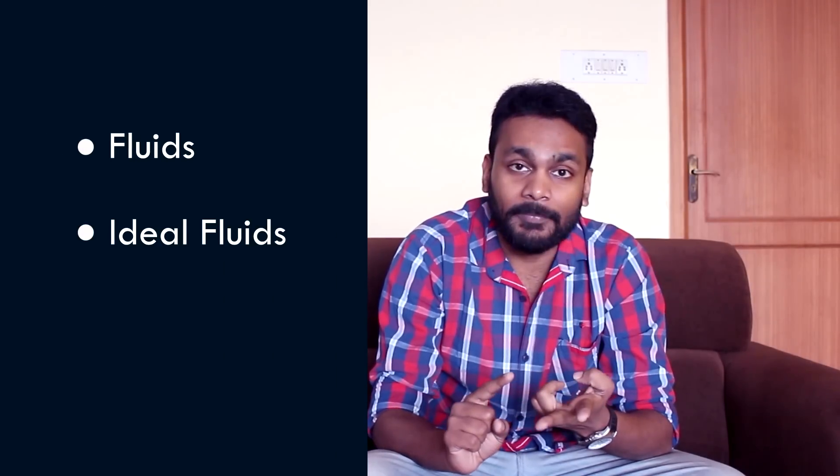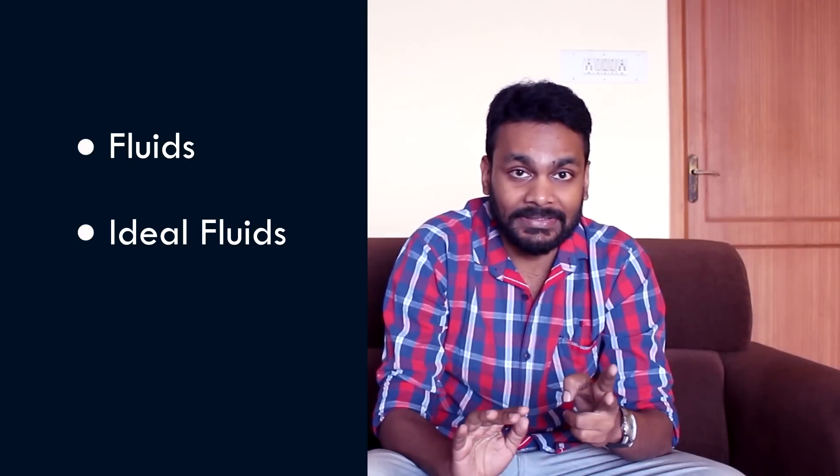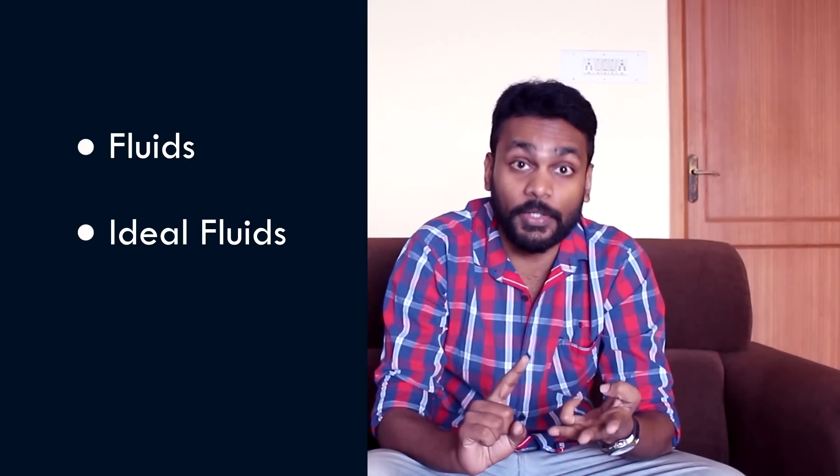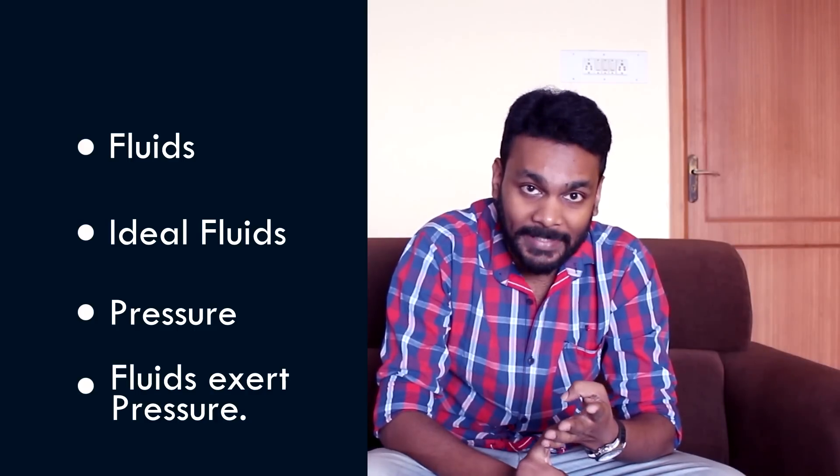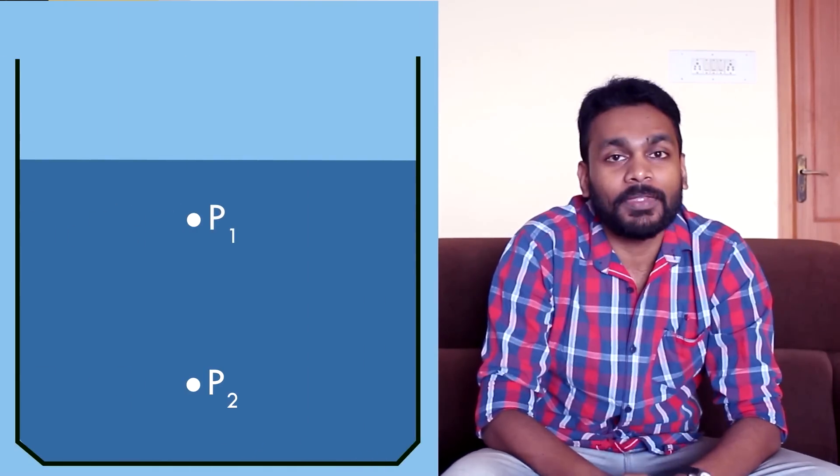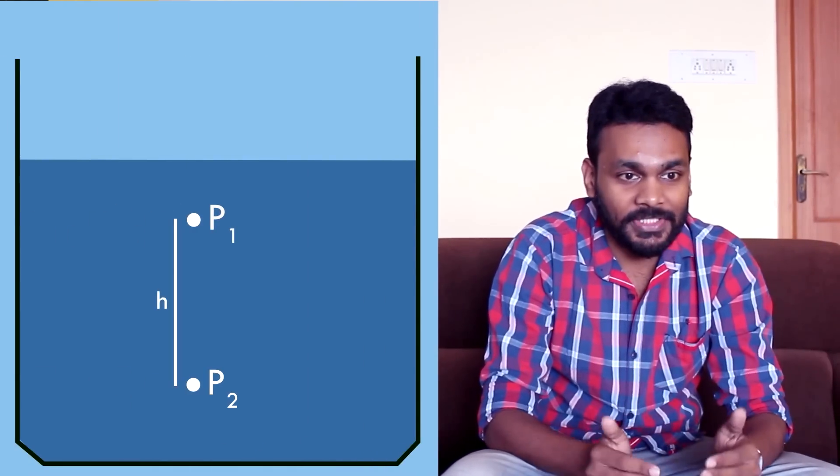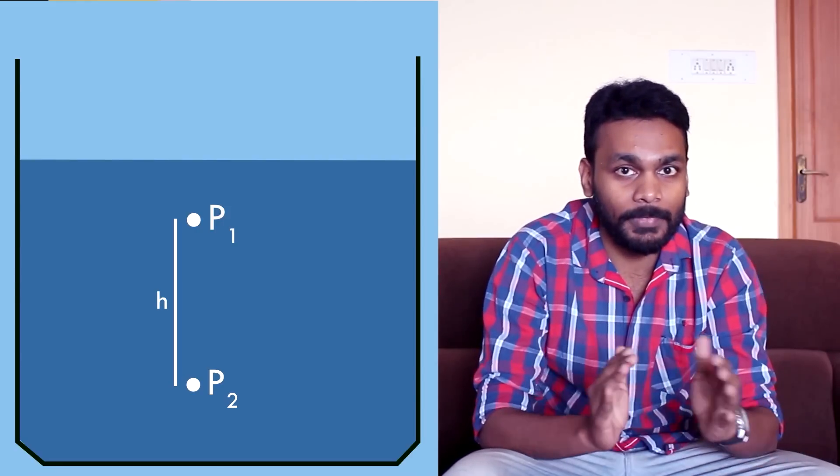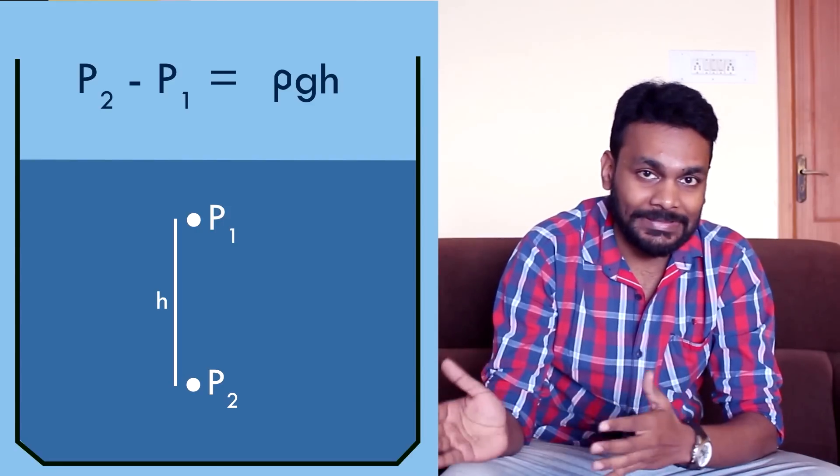Let's now get into what Pascal told us about how fluids behave. But before that, let's do a quick recap of what we already know. We know what fluids are. We're assuming fluids to be ideal, that is incompressible, that densities don't change. We know what pressure is, we know that fluids exert pressure, and that if you have two points like this, p1 and p2, separated by a height h, then the pressure difference between those two points is given by p2 minus p1 equals ρgh.